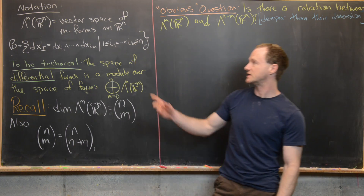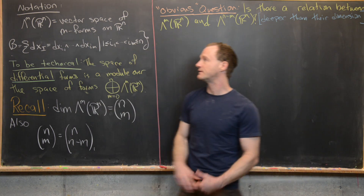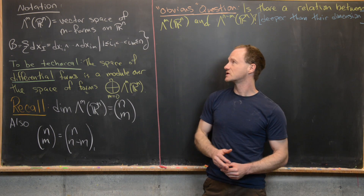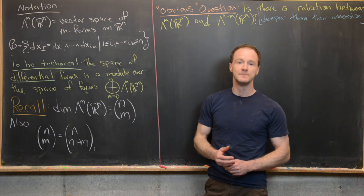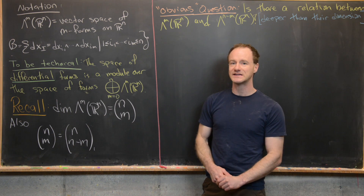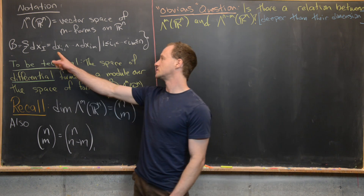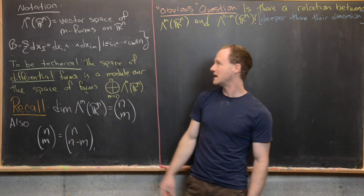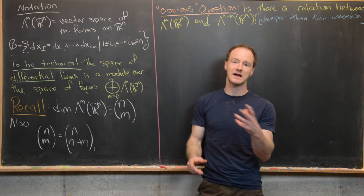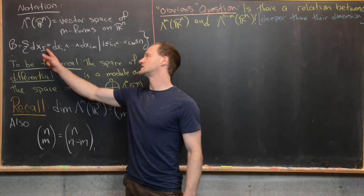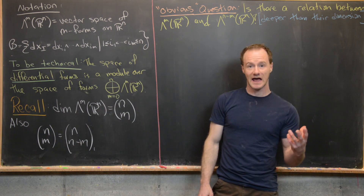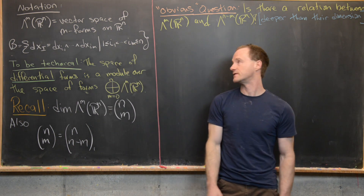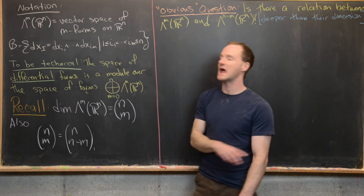The notation I want to introduce is this big wedge. So we've got this big wedge m R^N, which we're going to use to mean the vector space of all m-forms on R^N. Recall that it has a basis made up of elementary m-forms, given by dX_{i1} wedge dX_{i2} all the way up to dX_{iM}, where I_1 through I_M make up a multi-index. Sometimes we use dX sub capital I for that multi-index, which is an increasing sequence of numbers bounded between 1 and N.